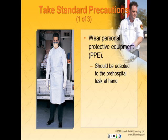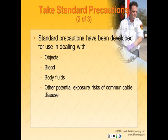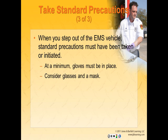You need to take standard precautions. Standard precautions and personal protective equipment need to be considered and adapted to the pre-hospital task at hand. PPE includes clothing or specialized equipment that provides protection to the wearer. The type of PPE will depend on the specific job duties required during a patient care interaction. Standard precautions have been developed by the Centers for Disease Control and Prevention. The concept of standard precautions assumes that all blood, body fluids, non-intact skin, and mucous membranes may pose a substantial risk of infection — with the exception of sweat. At a minimum, wear gloves before making patient contact, and consider glasses and a mask.